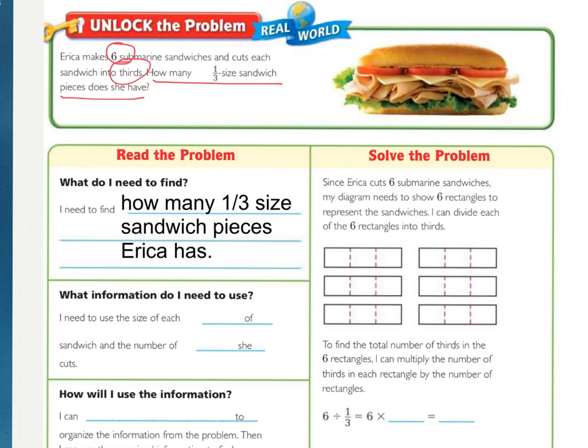And then what information do you need to use? It should say I need to use the size of each piece of sandwich and then number of sandwiches, like little mini sandwiches that she cuts.